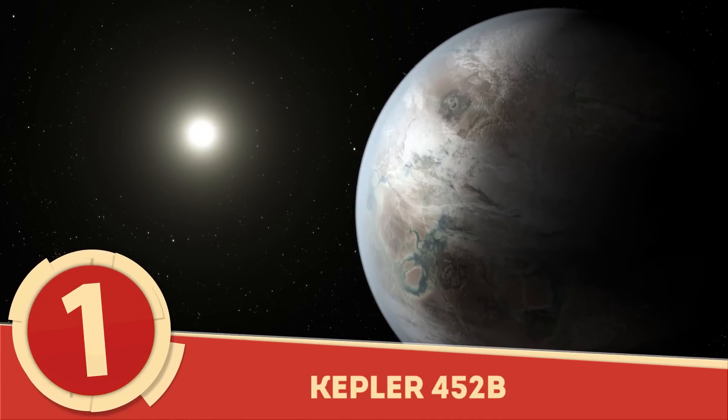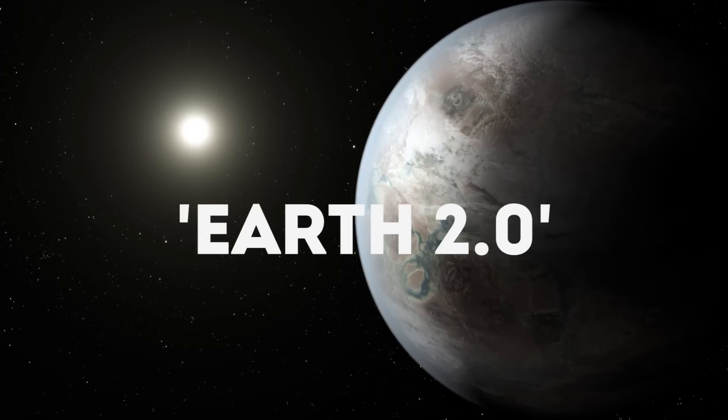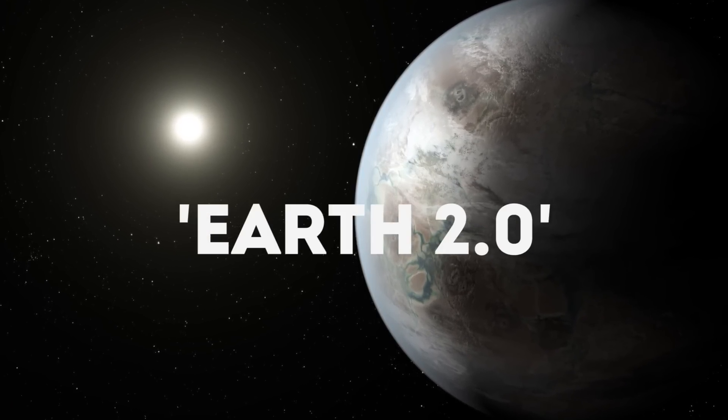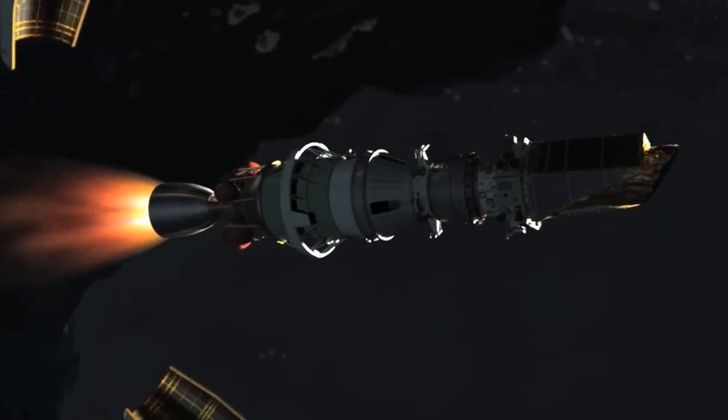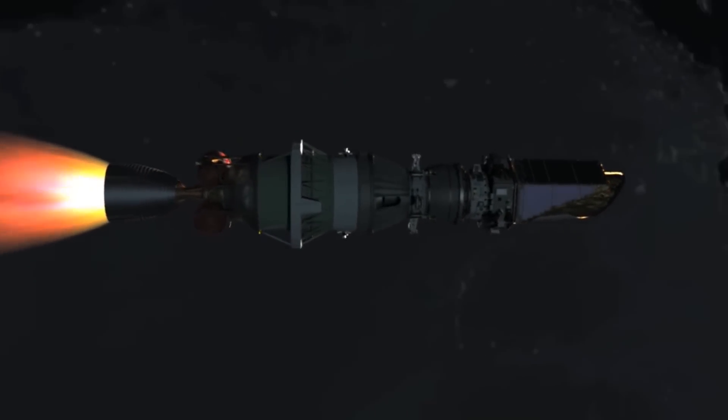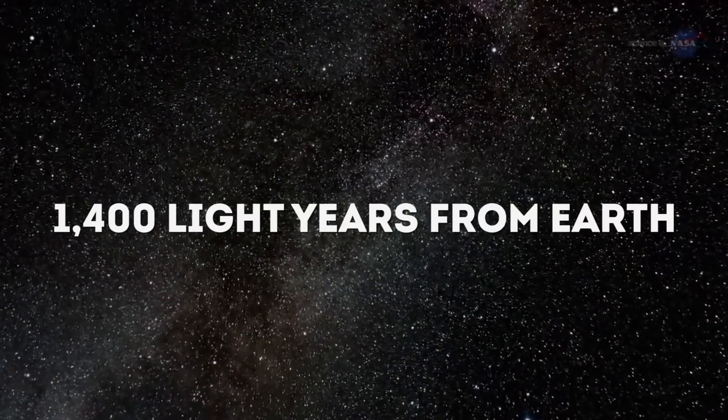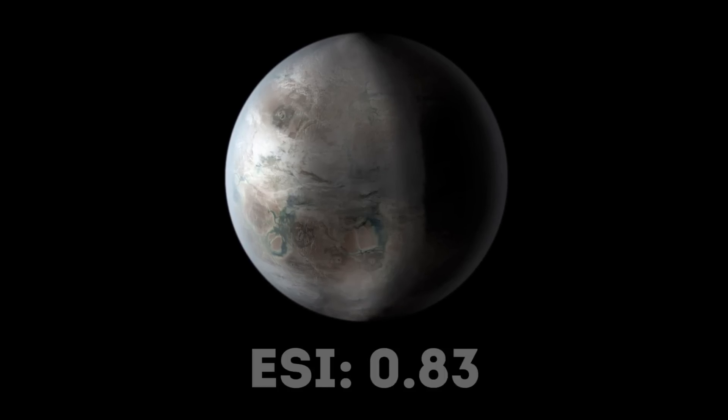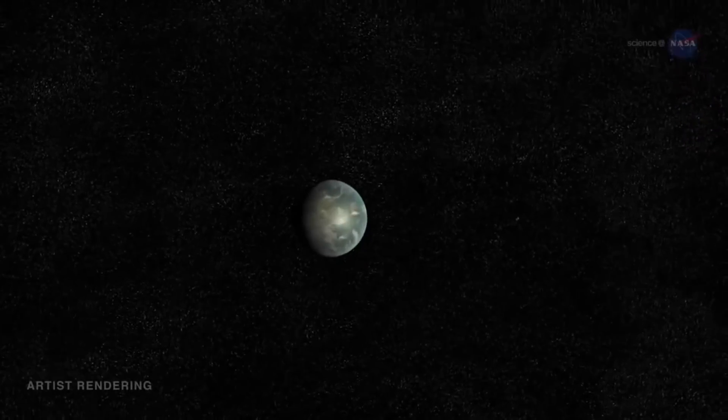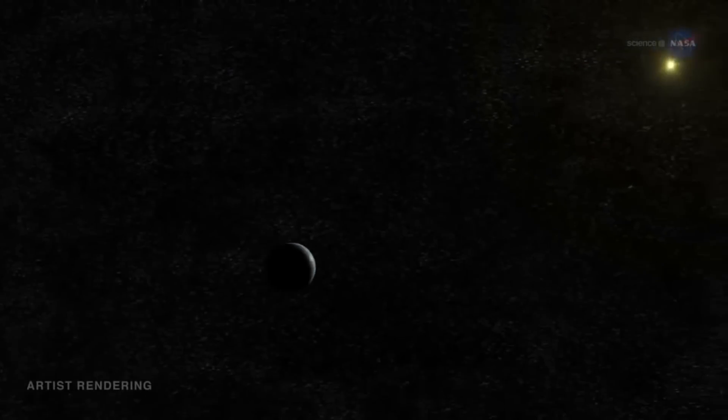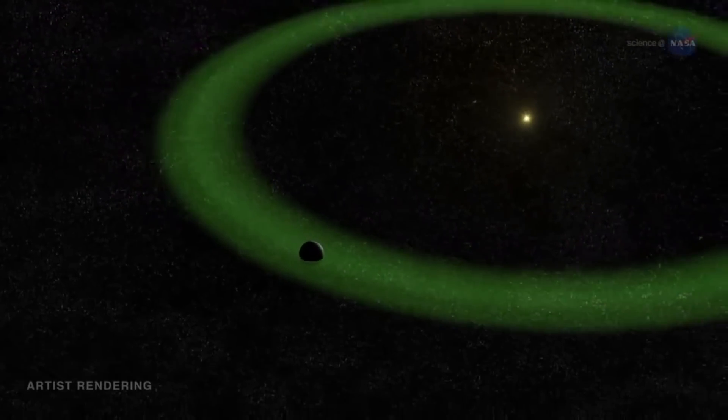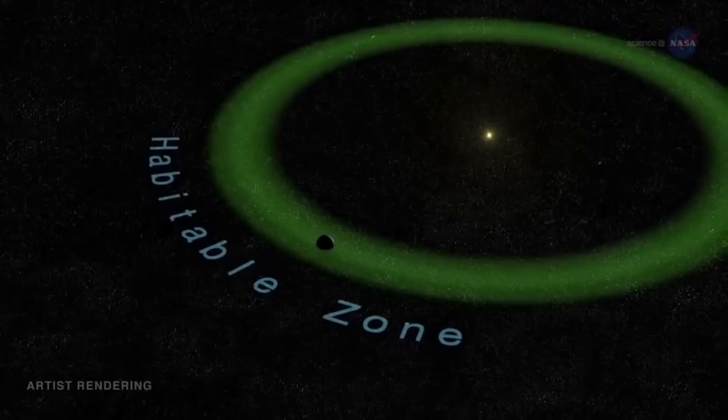Number 1: Kepler-452b. Also known as Earth 2.0, the discovery of Kepler-452b by the Kepler Space Telescope was announced in July of 2015. Found 1,400 light-years away from Earth, the Super-Earth, which has an ESI of 0.83, was located in the habitable zone of a G-type star that shares a very similar mass and surface temperature of our Sun.